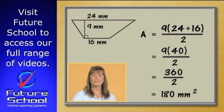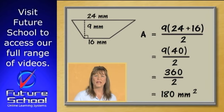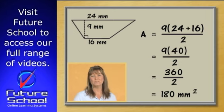If you like, you can divide the 40 by 2 and just work out 9 times 20. It still comes to 180. So the area of this trapezium is 180 millimetres squared.